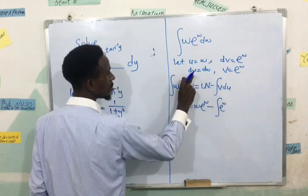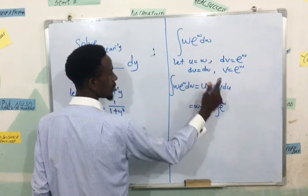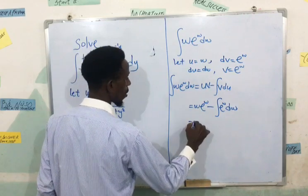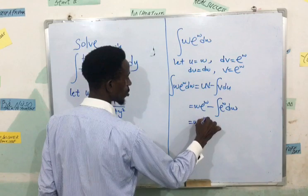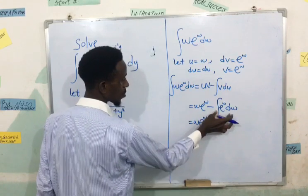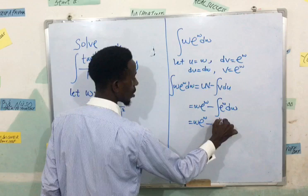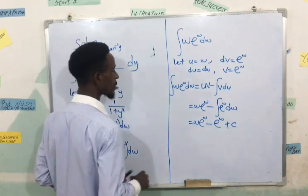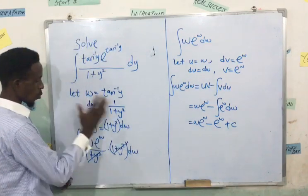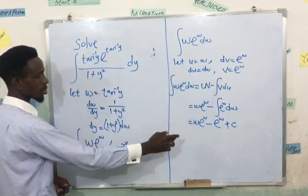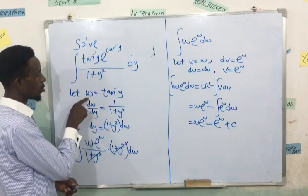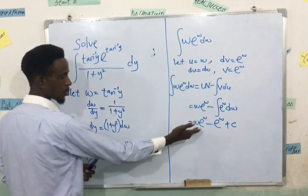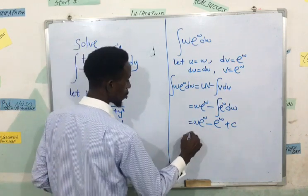So I'm going to have w exponential w minus, if I integrate this I'm having exponential w, then plus my integrating constant c. Remember we started off from this point to this point, so my w has a value. I said w is equal to tan inverse of y, so I'm going to put it here.